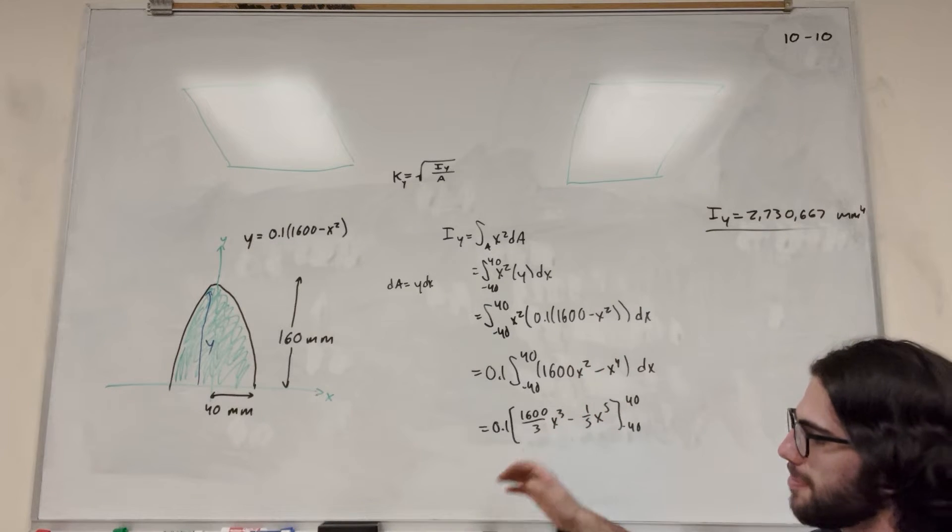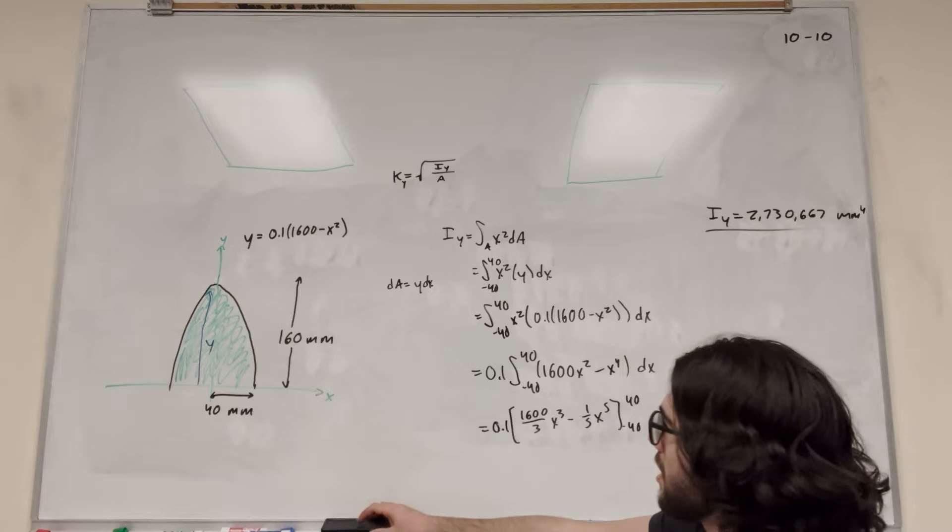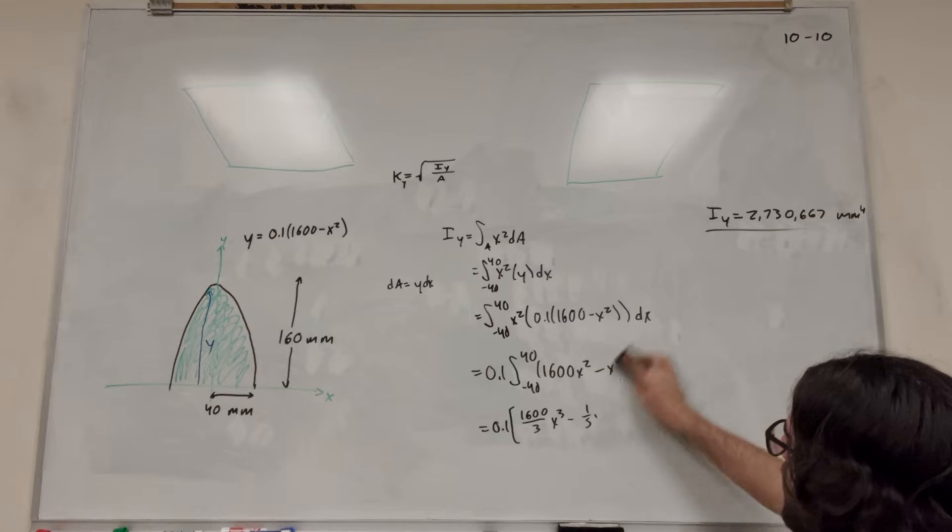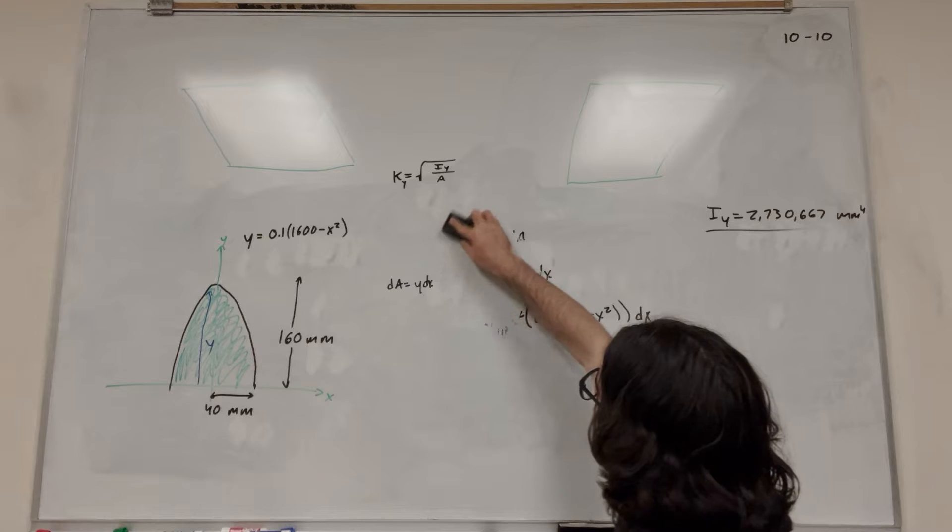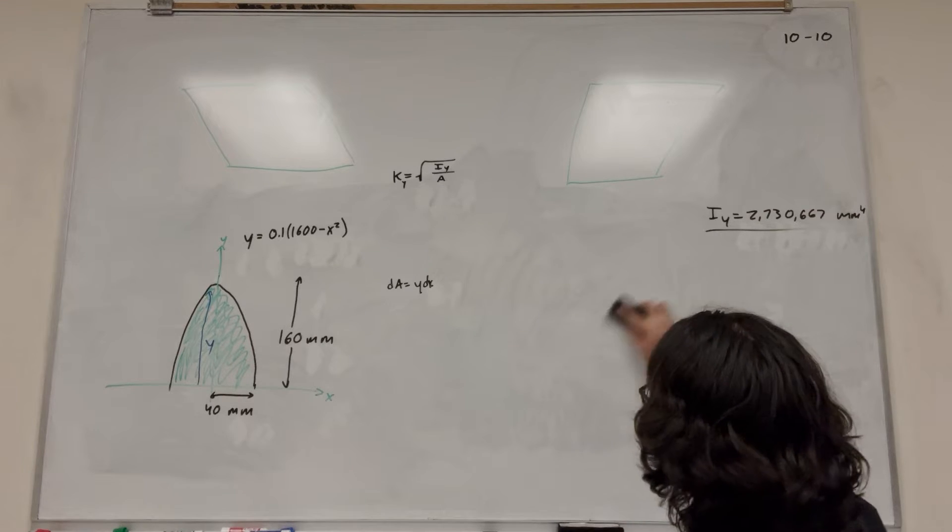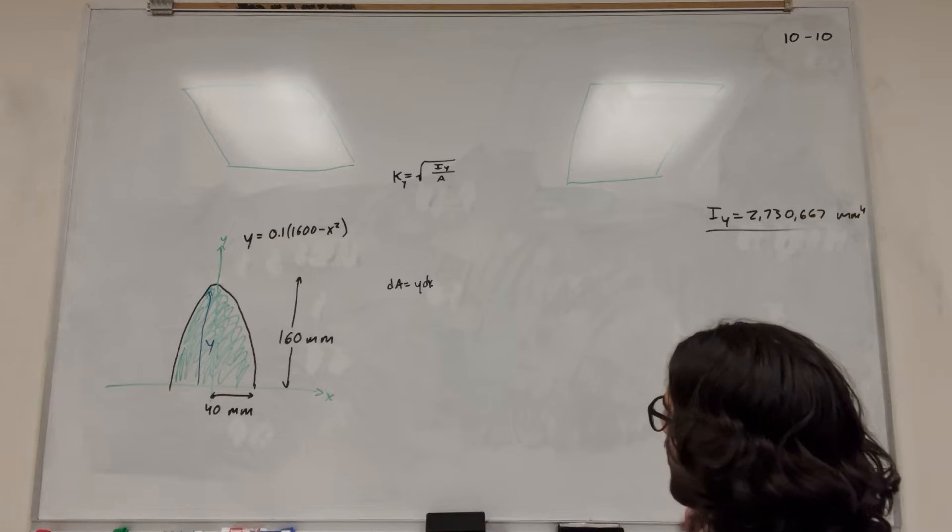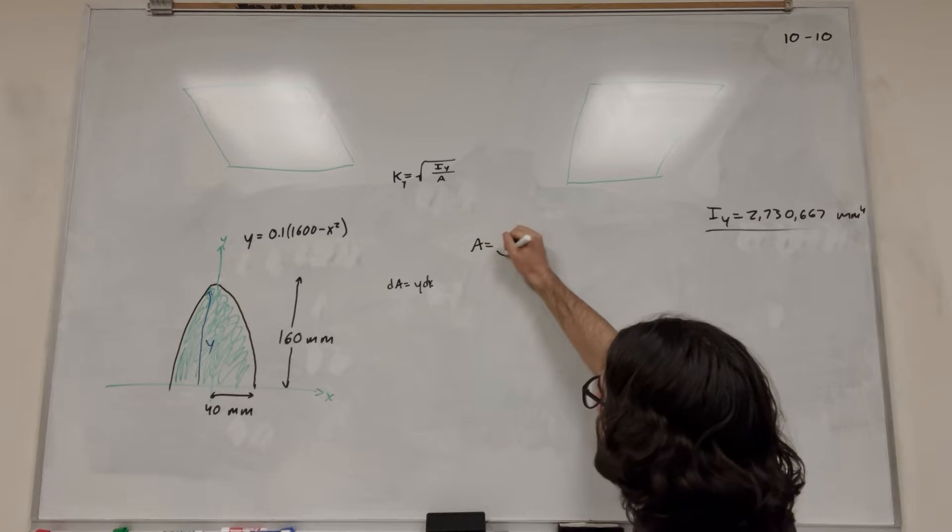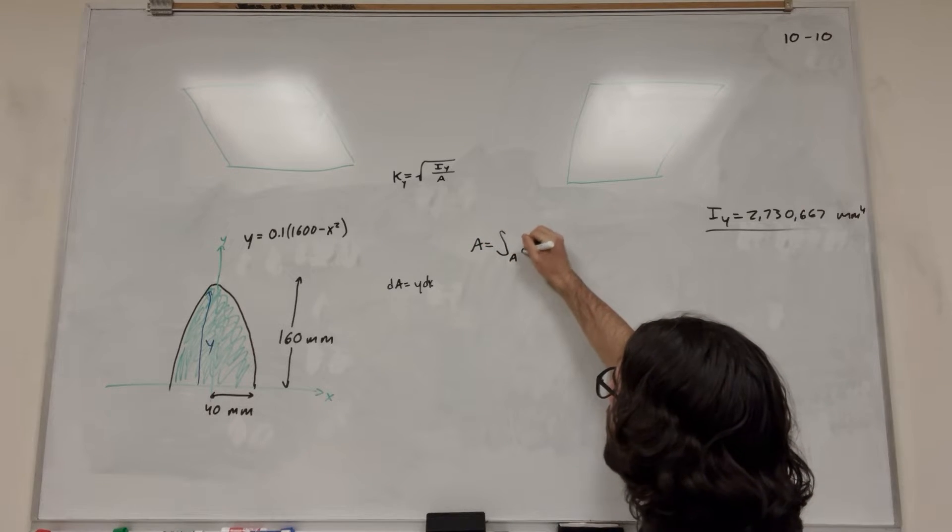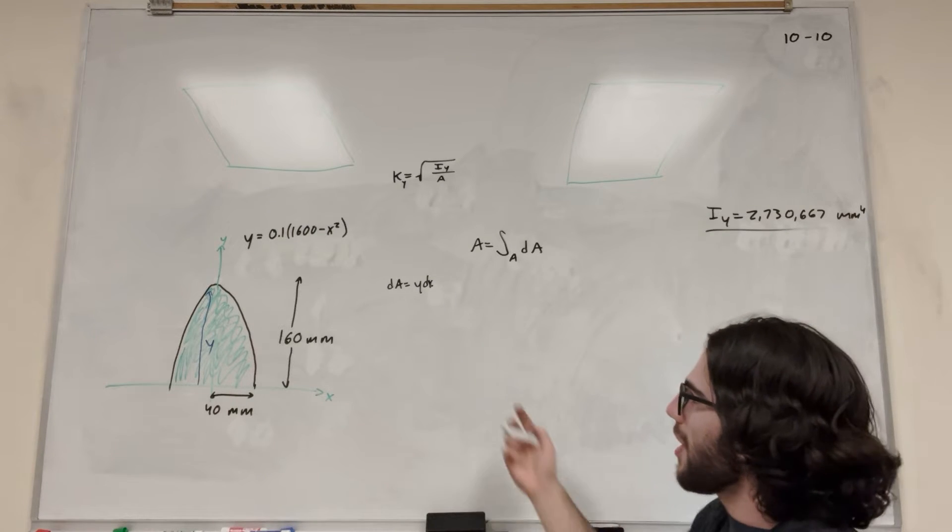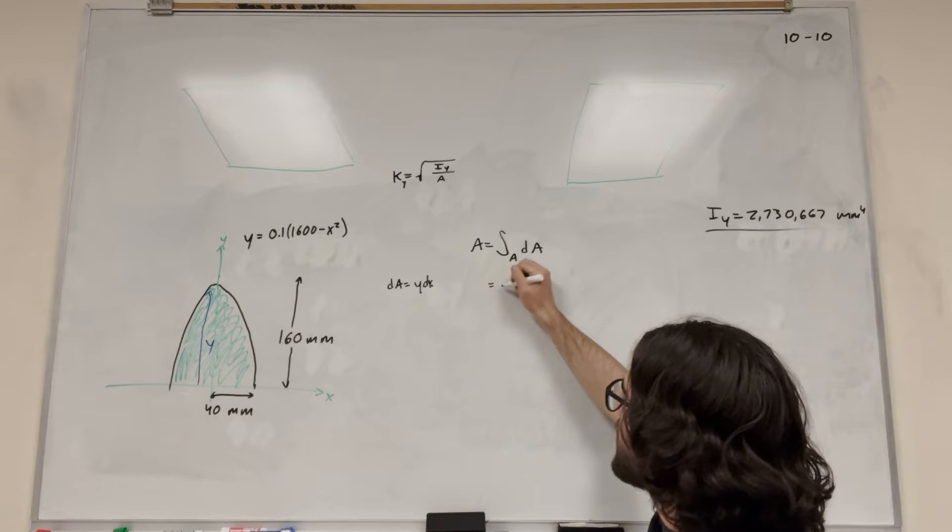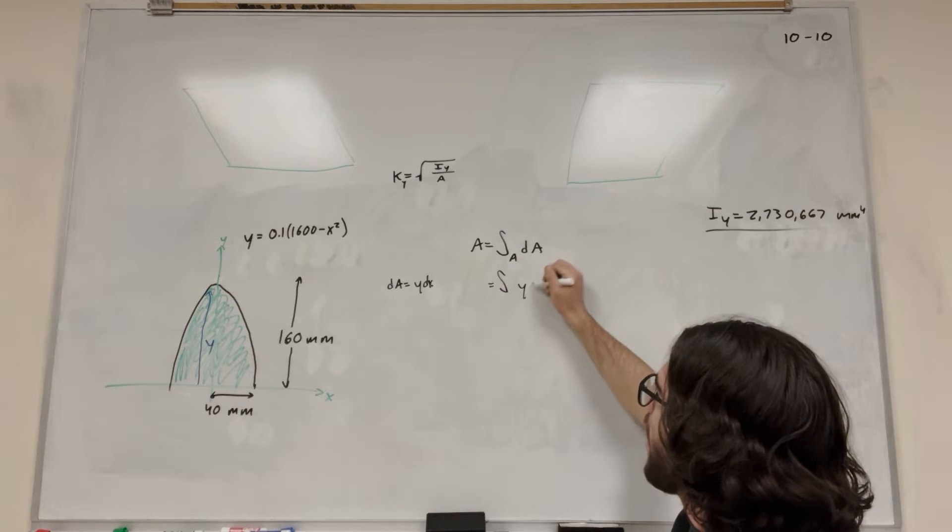So the next part is you need to find the area. So luckily, the area is going to be a little easier than this. So area, again, it's going to be the integral over the area of the area. I mean, that's a pretty simple statement to make. But we already have this here. So we can say that this is equal to y dx.